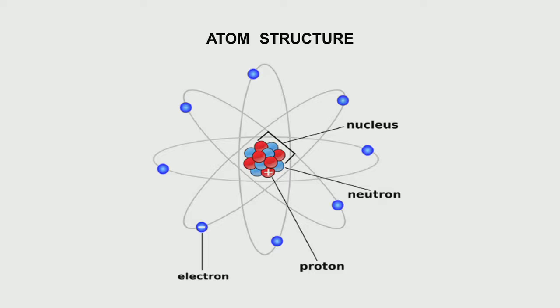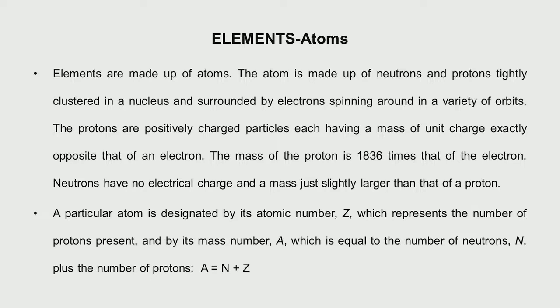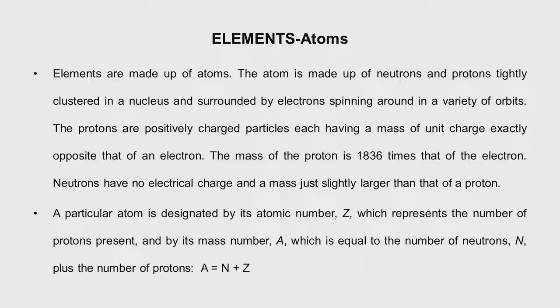The reaction of the nucleus with neutrons produces fission. Protons are positively charged particles while electrons are negatively charged. If you take an atom as a whole, it has an equal number of protons and electrons, so the net charge is nil. The mass of a proton is about 1836 times that of an electron. Neutrons have no electrical charge, and their mass is slightly higher than that of a proton.